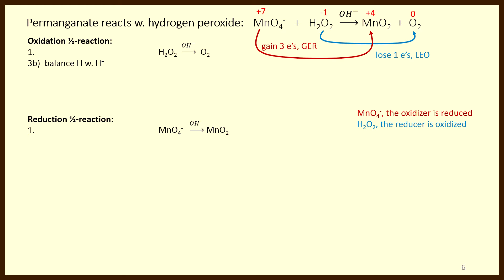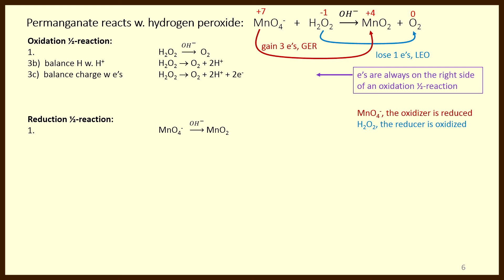Let's balance the oxidation half-reaction. Step two says balance atoms other than hydrogen and oxygen — there are no other atoms here, so we move to step 3a: balance oxygen by adding water. The oxygen is already balanced, so we move to step 3b: balance hydrogen with H+. There are two hydrogens on the left, so I put 2 H+ on the right. Step 3c: balance the charge with electrons. The charge on the left is zero; the charge on the right is plus two. I add two negative charges to the right to make both sides zero. Note that electrons are always added to the right side of an oxidation half-reaction — oxidation is loss of electrons, so we must show electrons being lost. If you balance an oxidation half-reaction and find electrons on the left, start over — you made a mistake.